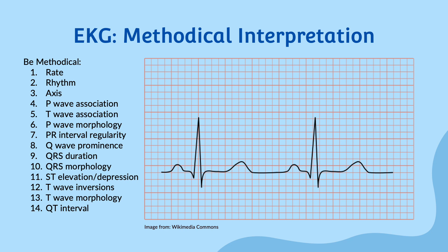Once we have checked the rate, rhythm, and axis, we should ensure that there are P waves associated with every QRS and that there are T waves after every QRS. We should ensure that the P waves have normal morphology and that the P-to-R interval is within normal limits. The P-to-R interval is the time between the P wave and the QRS complex, which represents the electrical activity in the ventricles. In normal sinus rhythm, the PR interval should be between 0.12 and 0.20 seconds. We should also make sure that the interval is regular for each QRS, as some pathologies have PR intervals that are normal for some QRS complexes but lengthened for others.